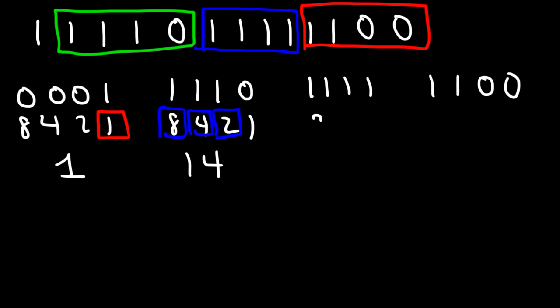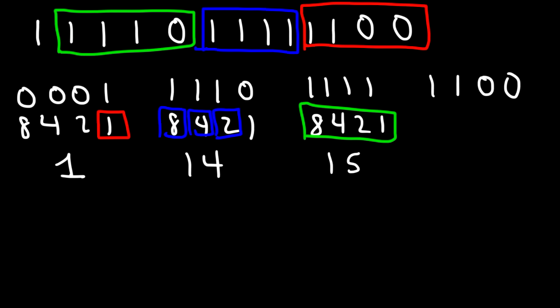And for the third group, all of them are important, so they add up to 8 plus 4 plus 2 plus 1, which is 15. And for the final group, it's just 8 plus 4, which is 12.